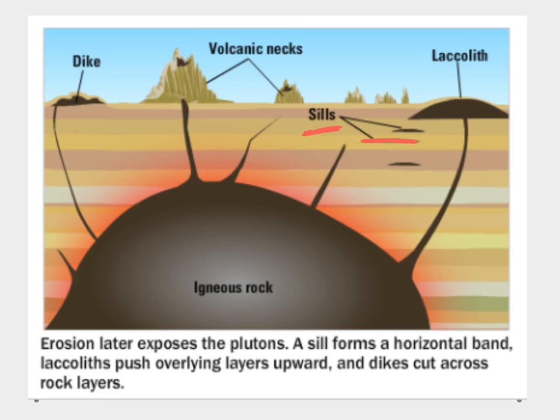We can also have a larger formation, which is a laccolith. A laccolith is kind of a lens-shaped dome of magma that cools under the surface, but as it fills, it causes the surface to upwarp a little bit. So it's a big lens-shaped, larger structure.